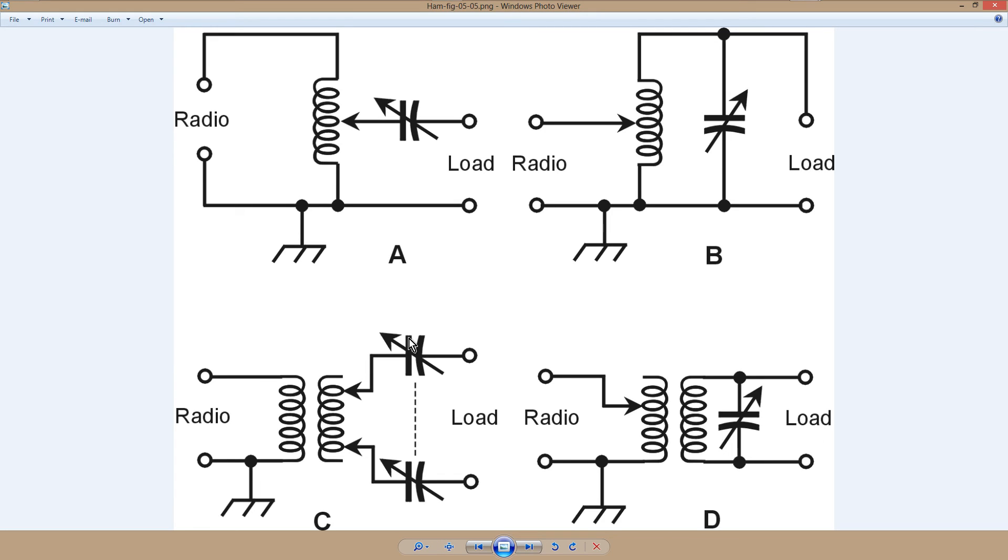So you can use these. The thing to do with an unbalanced line is try either one of these circuits and use the one that gives you the best results. With a balanced line, the same thing. Try this design at C, and if that doesn't work, try the design at D.